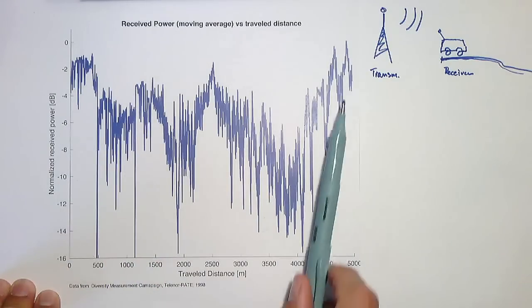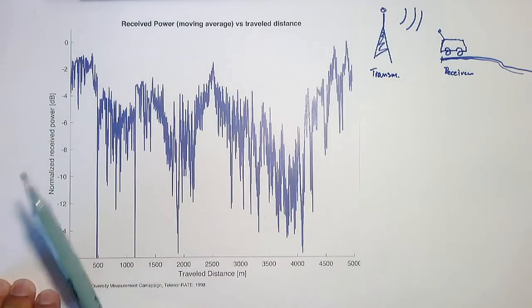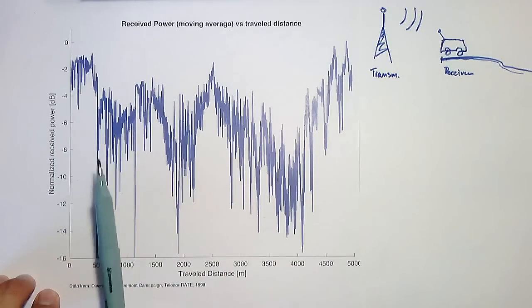The particular realization of this measurement here is determined by the propagation conditions during the measurements. And this we can't repeat because it may depend on the other cars on the road, the exact position on the road, etc.